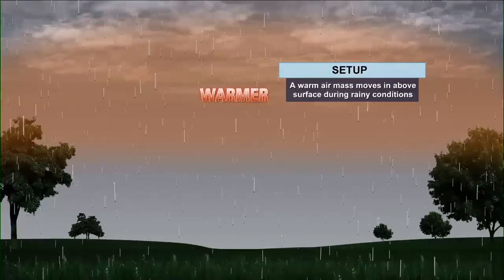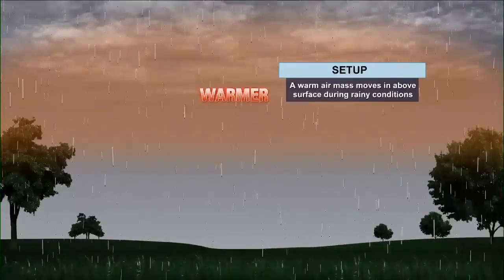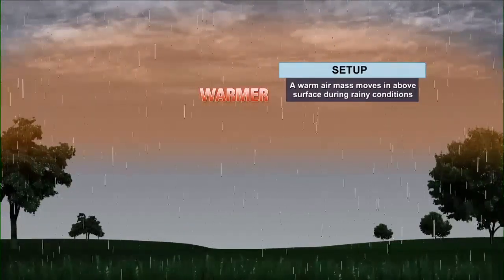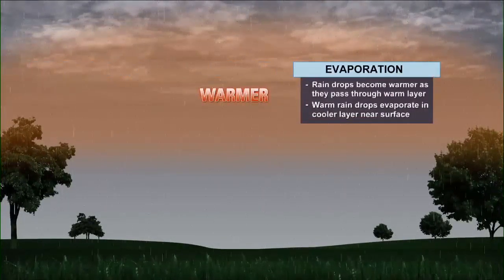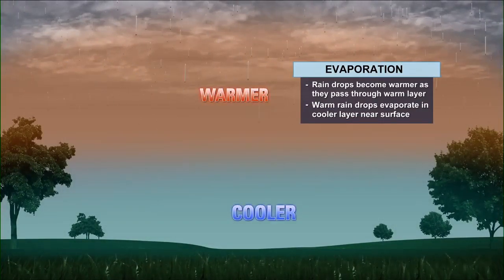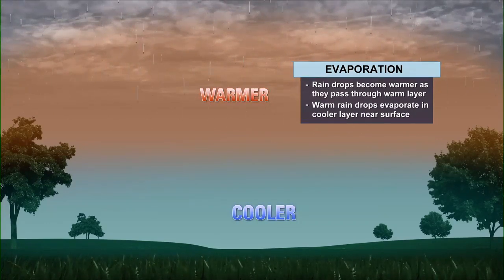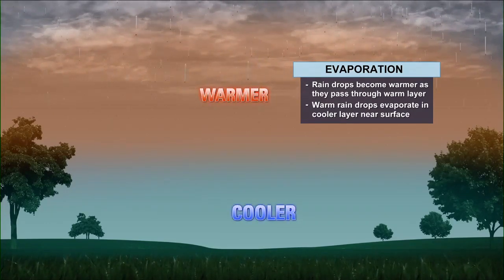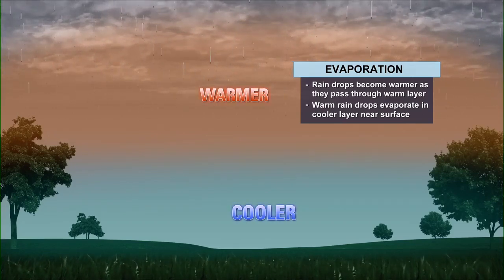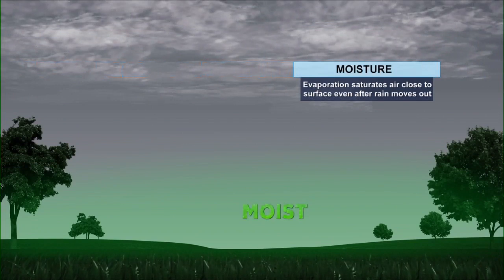Our next one is precipitation fog. The setup is a warm air mass moving in above the surface during rainy conditions — it's already raining and you have warm air moving in. Then of course you have evaporation: raindrops become warmer as they pass through the warm layer, and then the warm raindrops evaporate into the cooler layer near the surface.